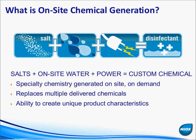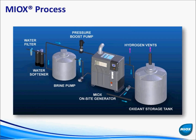On-site chemical generation is very simple: we take salt, add water to create a brine solution, then pass it through an electrochemical cell to produce a disinfectant. This is what a typical process train would actually look like.